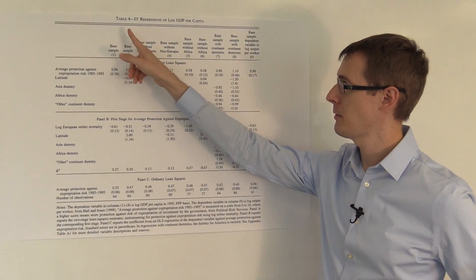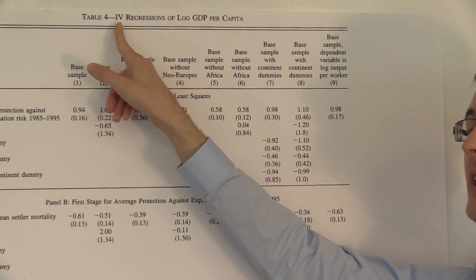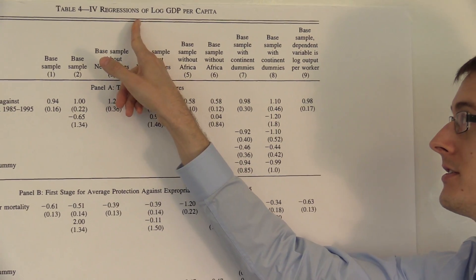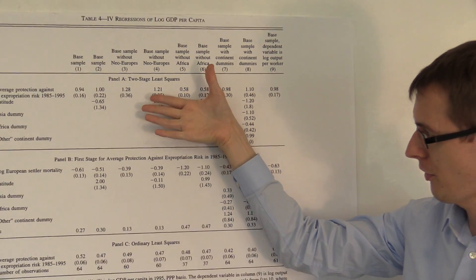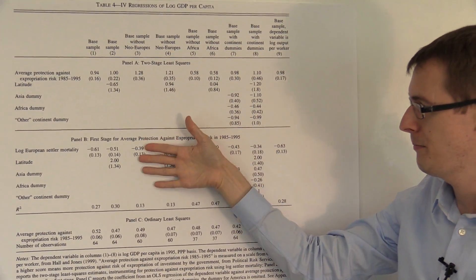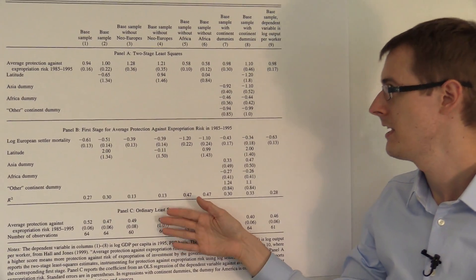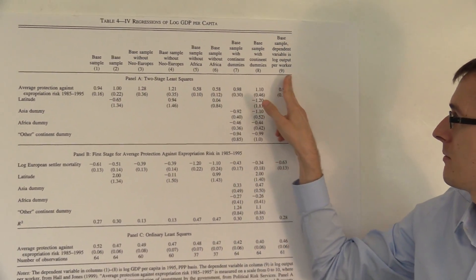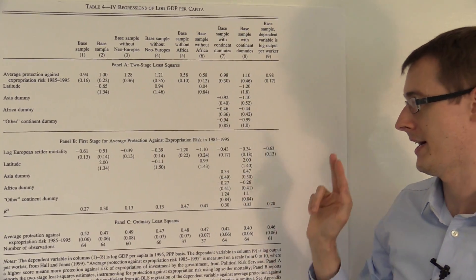So here, in their Table 4, titled IV — Instrumental Variables Regressions — they've got three panels: panel A, B, and C. And then nine columns, one through nine.